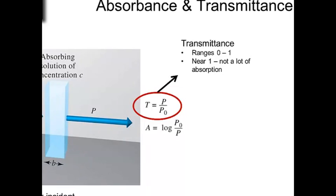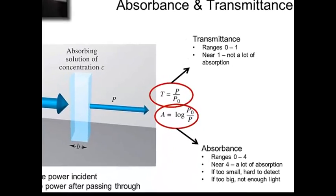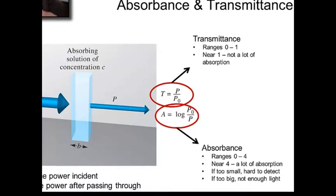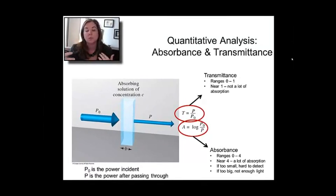Transmittance will range from 0 to 1, and near 1 there's not a lot of absorption. Absorbances will range 0 to 4, but you don't want to operate in that big of range because at 4, very few photons are getting through your sample. It's too black. The optimal is about 0.3 to 0.8 in terms of absorbance because you take enough photons out, but not so many that you have to resort to photon counting.